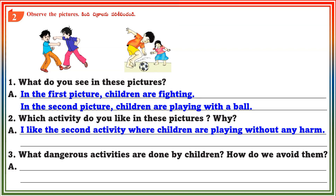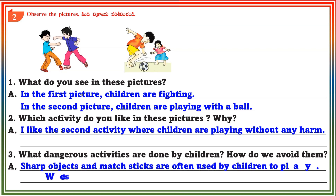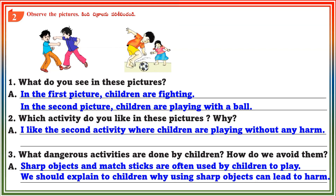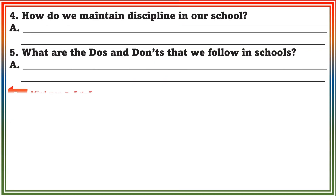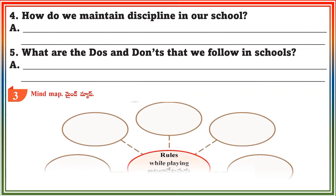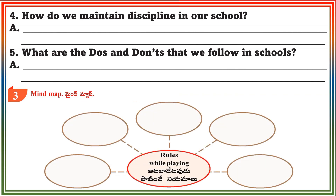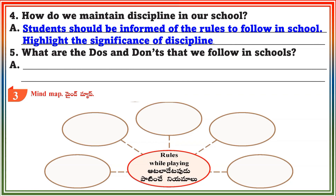Question 3: What dangerous activities are done by children? How do we avoid them? Answer: Sharp objects and matchsticks are often used by children to play. We should explain to children why using sharp objects can lead to harm. Question 4: How do we maintain discipline in our school? Answer: Students should be informed of the rules to follow in school. Highlight the significance of discipline.